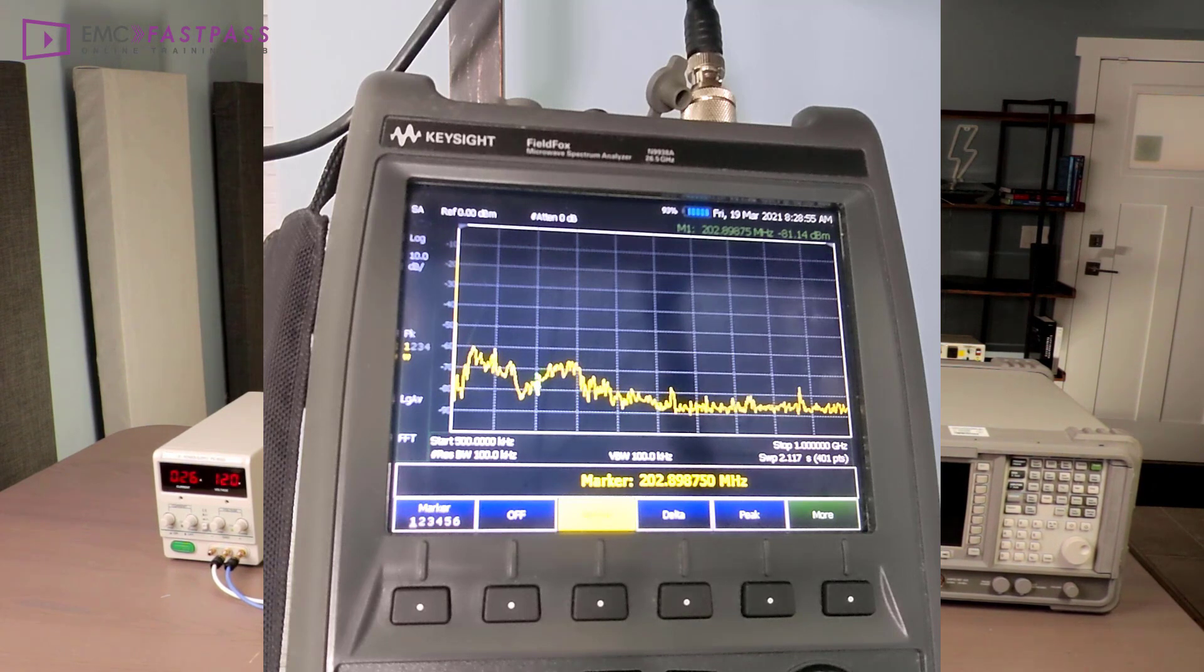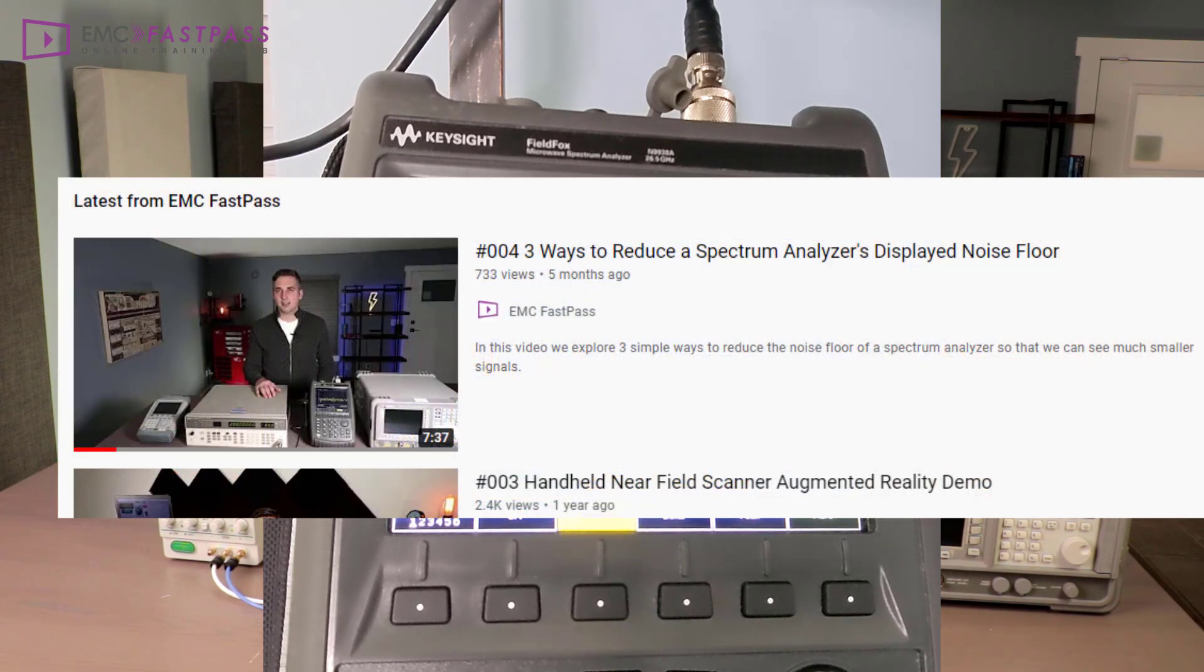The other thing is to enable the pre-amplifier if you have one. And if you want some more examples of this go check out video 4 on YouTube on the EMC FastPass channel.